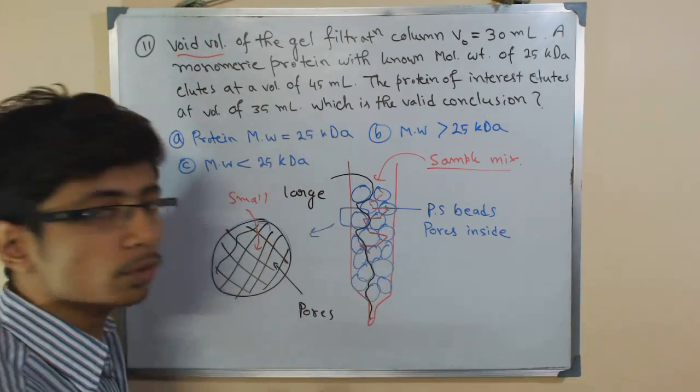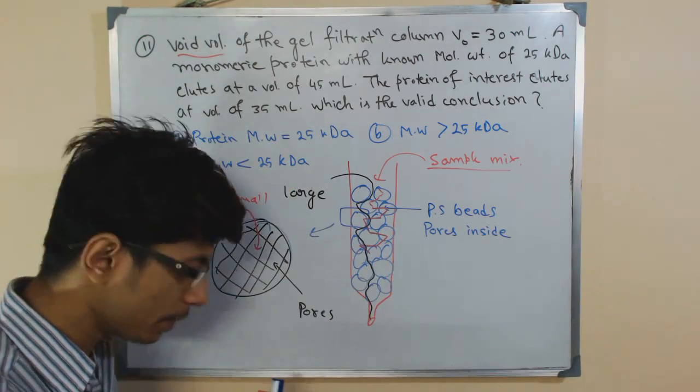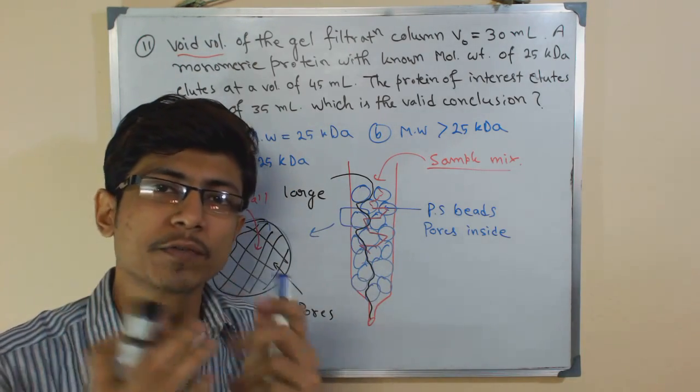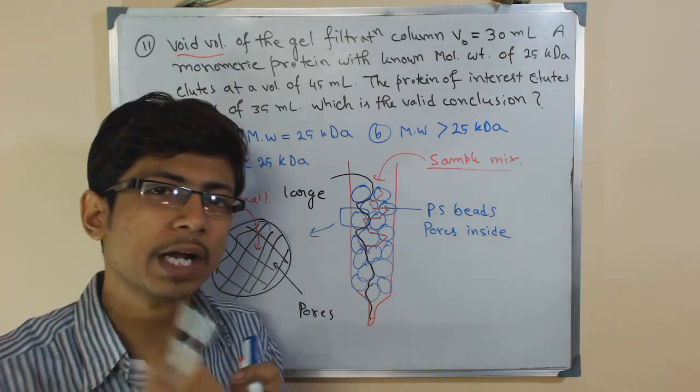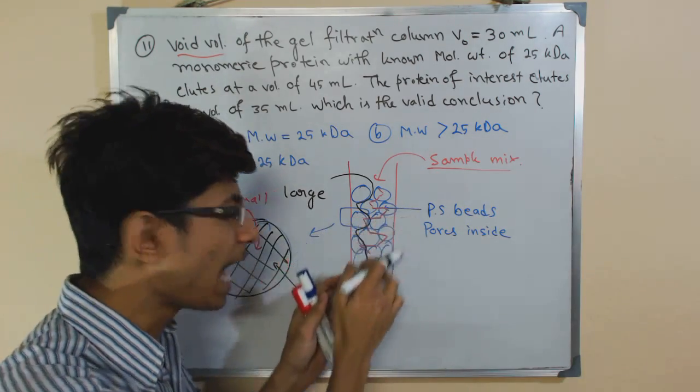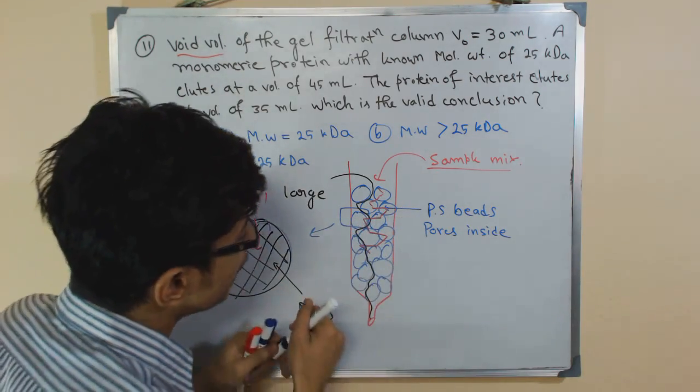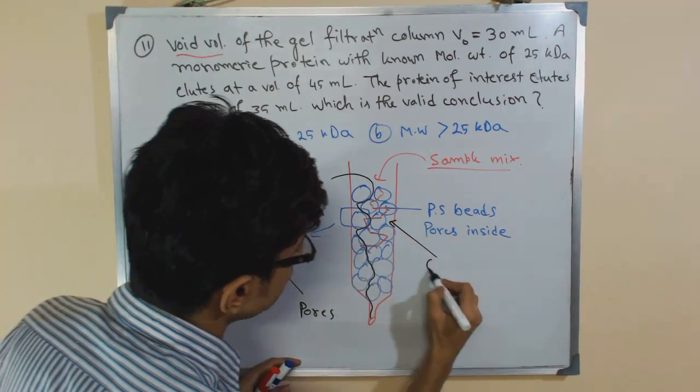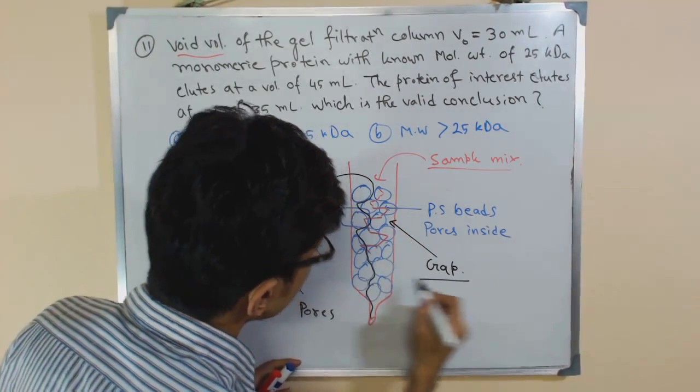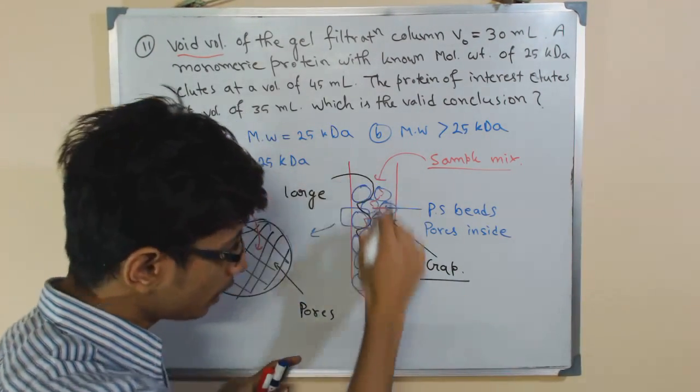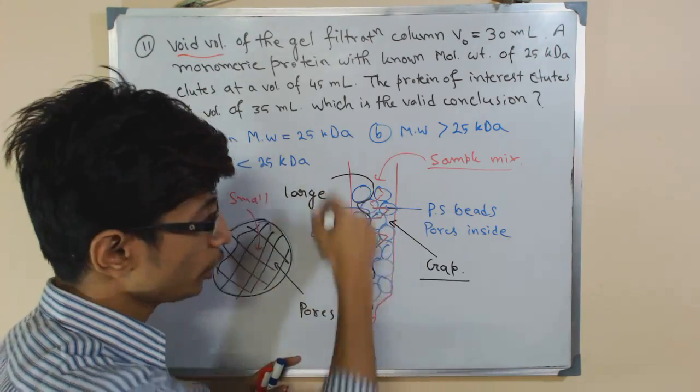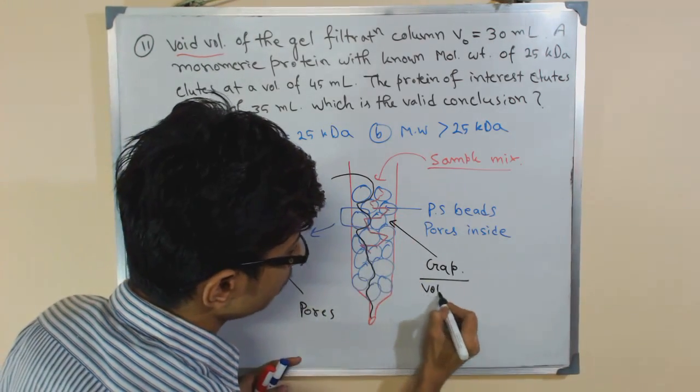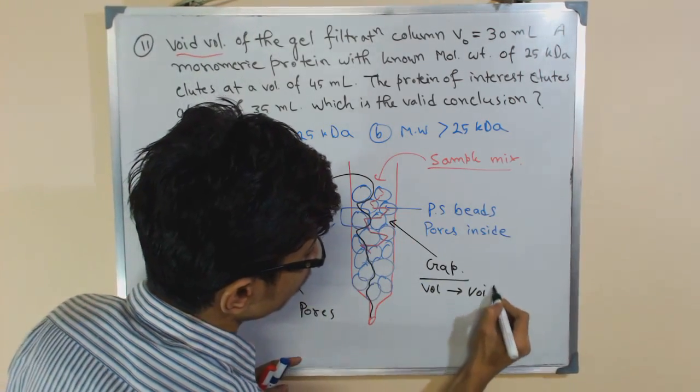Instead of entering into the beads they just pass through the blank regions between the beads. The beads are of different amorphous or simple round shape so they have gaps. They pass through the gap. This gap region - the volume of all the gaps - is termed as void volume.